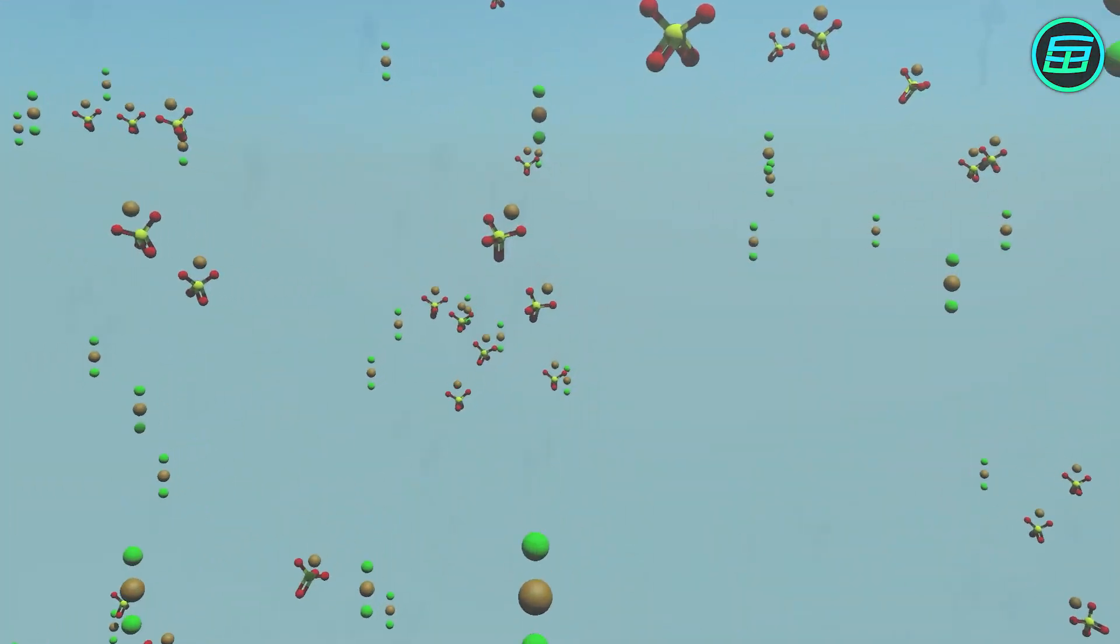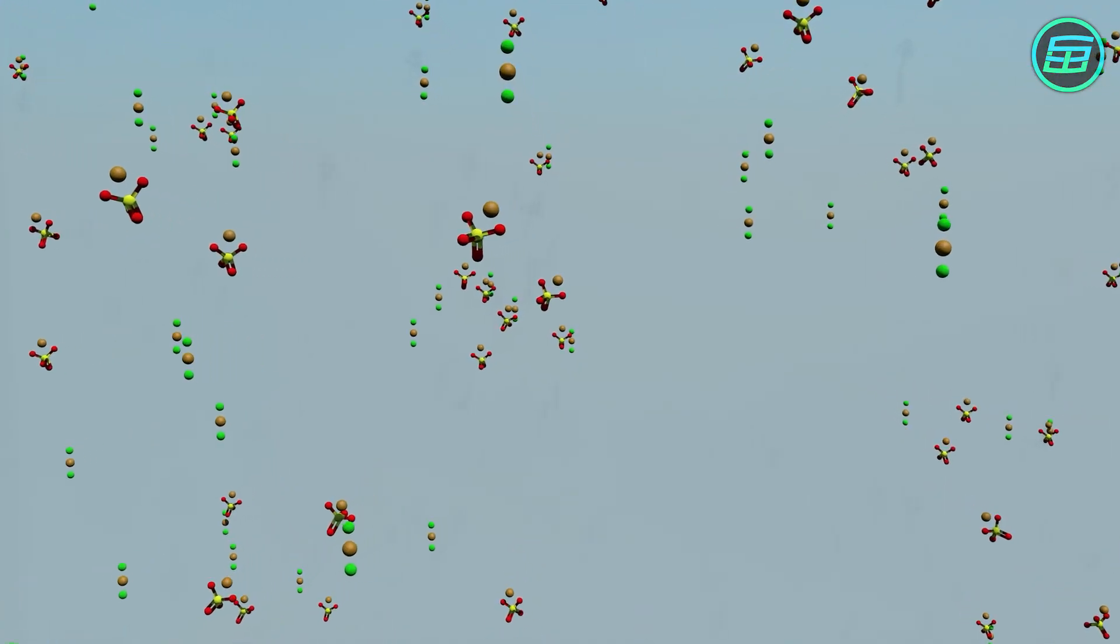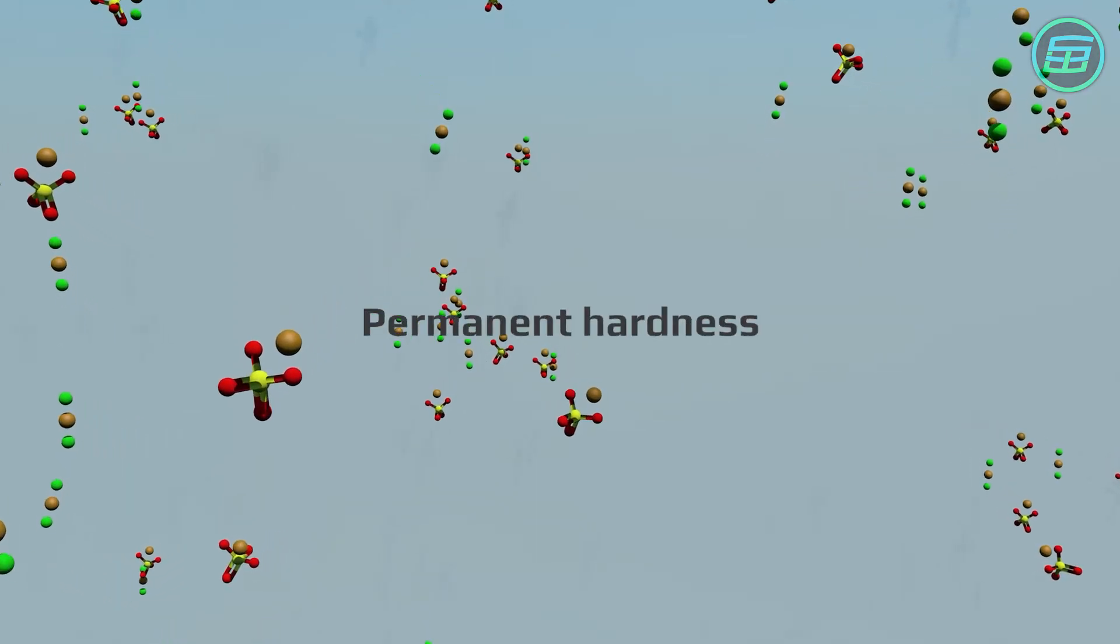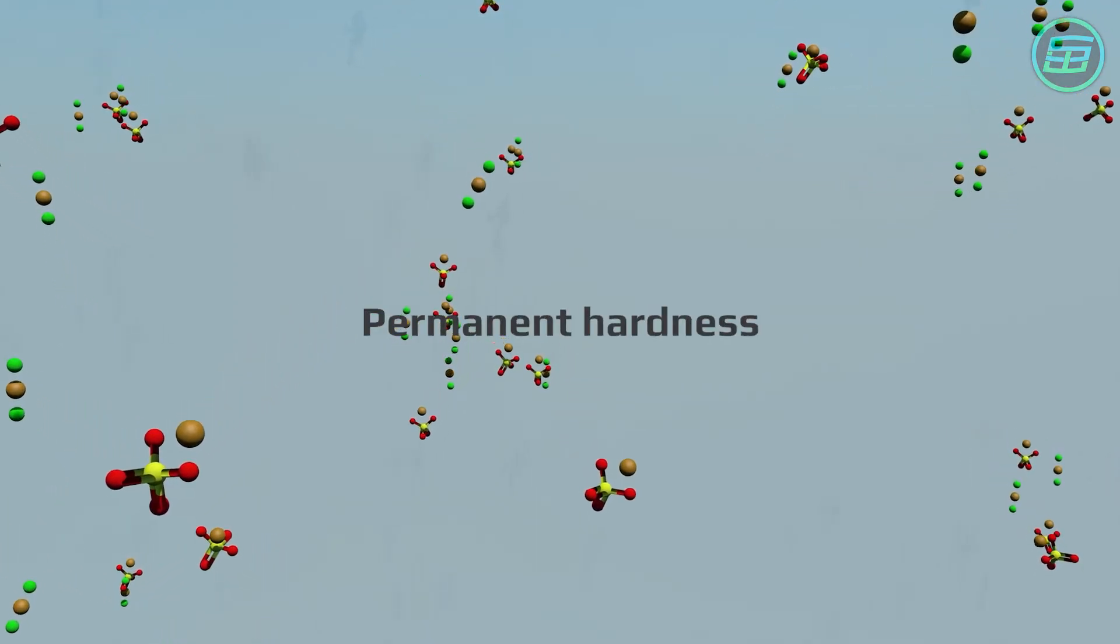On the other hand, if water hardness is due to the presence of calcium and magnesium sulfates and chlorides, it's known as permanent hardness and can't be eliminated by boiling.